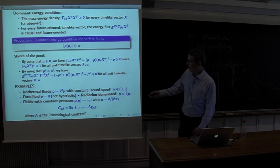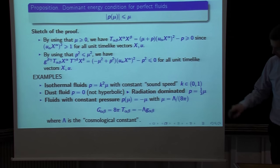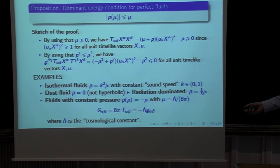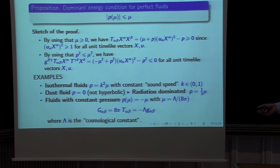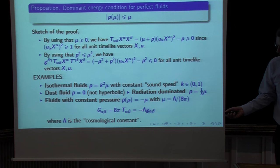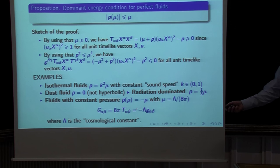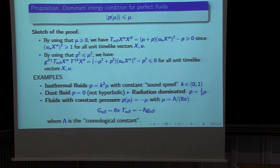A further case is taking the pressure to be p = −μ = −Λ/(8π) for a constant Λ. In this case T_αβ = −Λ g_αβ, which is exactly the cosmological constant. The cosmological constant can be introduced either on the left-hand side of the Einstein equations or viewed as part of the pressure of a perfect fluid — both formulations are equivalent.